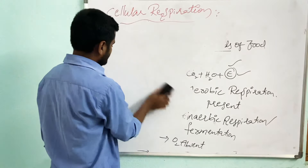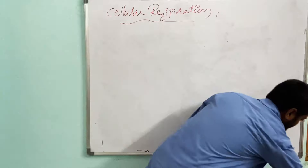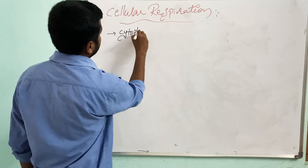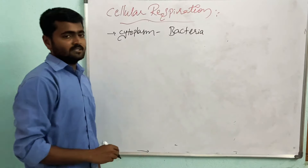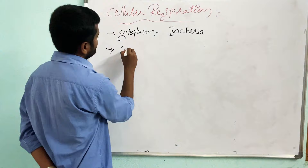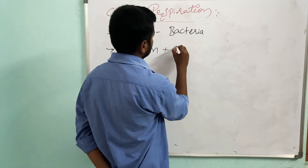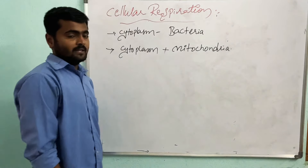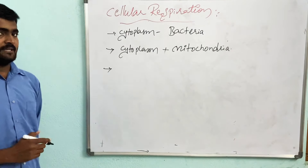In unicellular organisms like bacteria and yeast, cellular respiration takes place in the cytoplasm. In multicellular, highly developed organisms, cellular respiration takes place partly in the cytoplasm and also in the mitochondria.